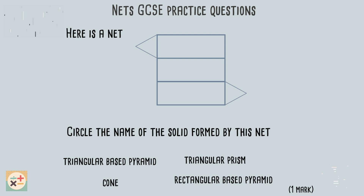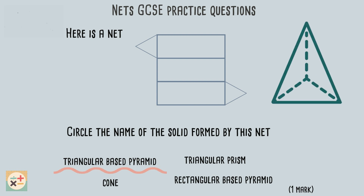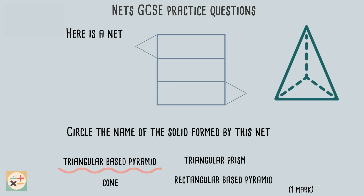Have a look at this second question — we are given a net and the names of some 3D shapes. Let's see what the shapes look like and if they match the net. During the exam you would have to either visualize these shapes or sketch them out. The triangular based pyramid does not contain any rectangular faces, whereas the net in the question has three rectangular and two triangular faces, so we can be sure the net is not of a triangular based pyramid.